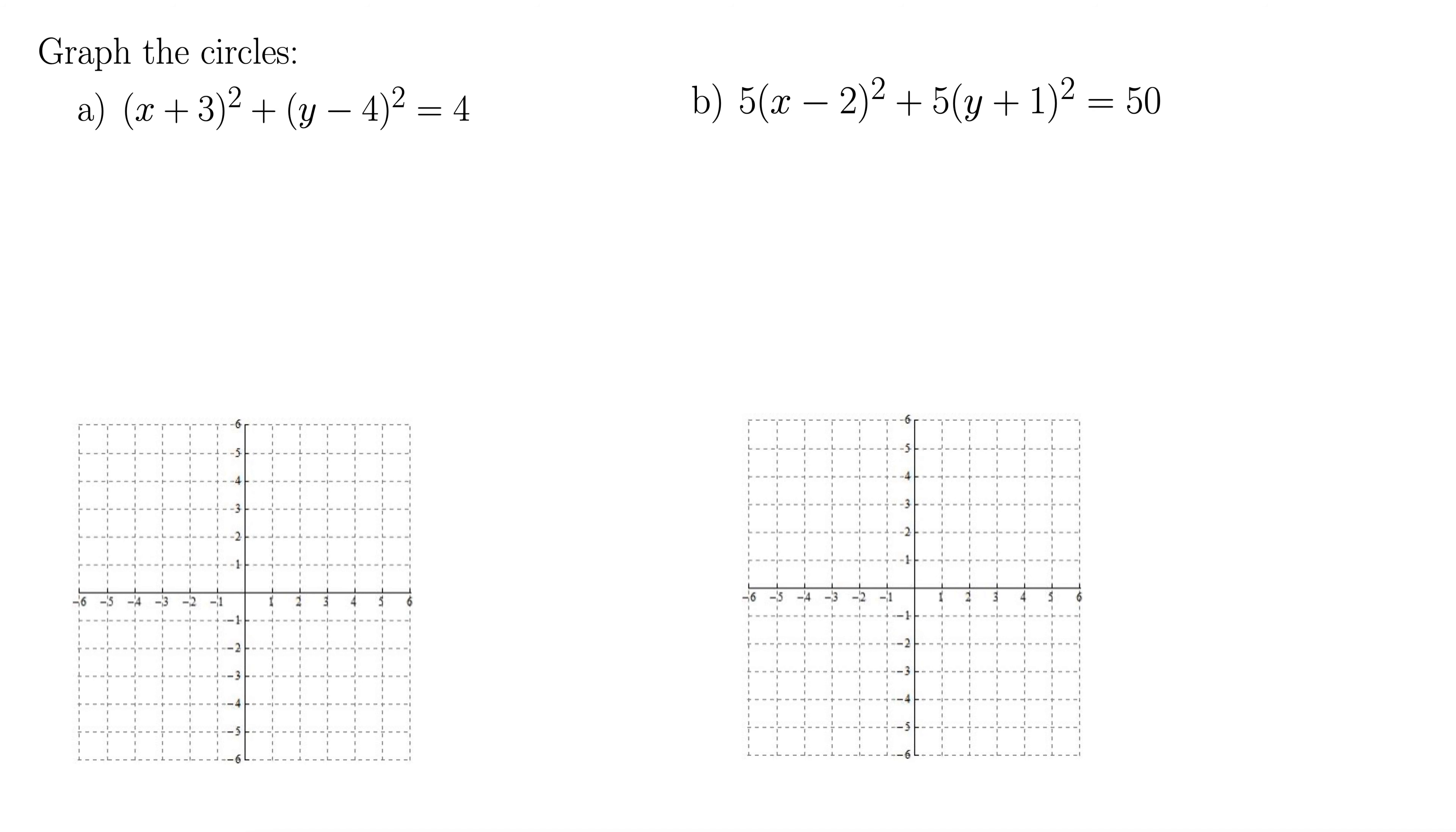This brings us to standard form for a circle, which is (x - h)² + (y - k)² = r². And what that means is that the center is (h, k) and the radius is r. Note that you have to essentially change the signs of these terms inside the parentheses to get the center.